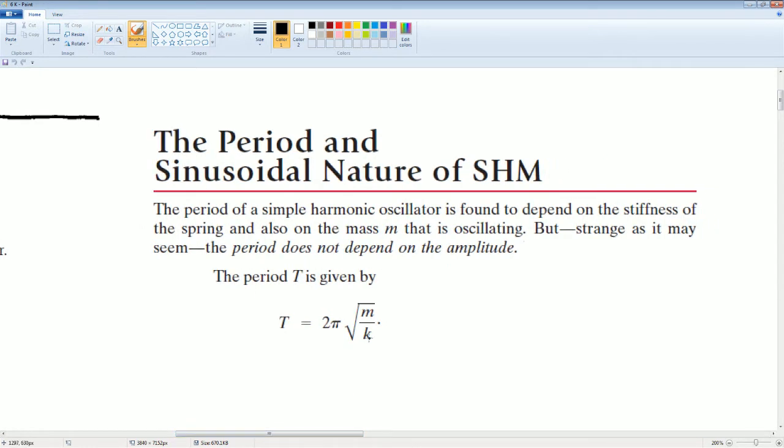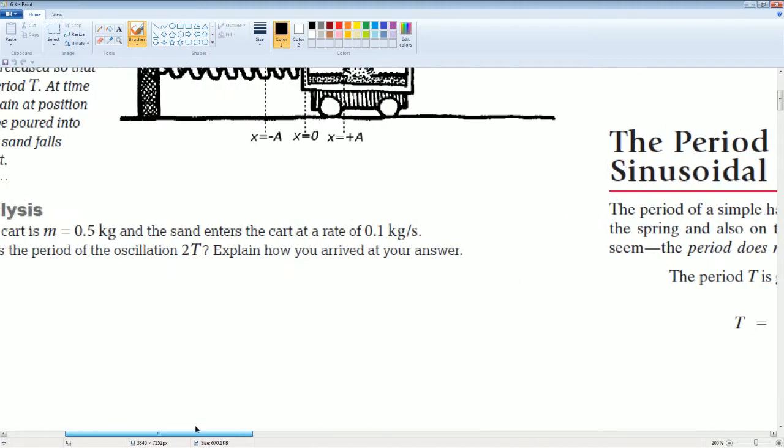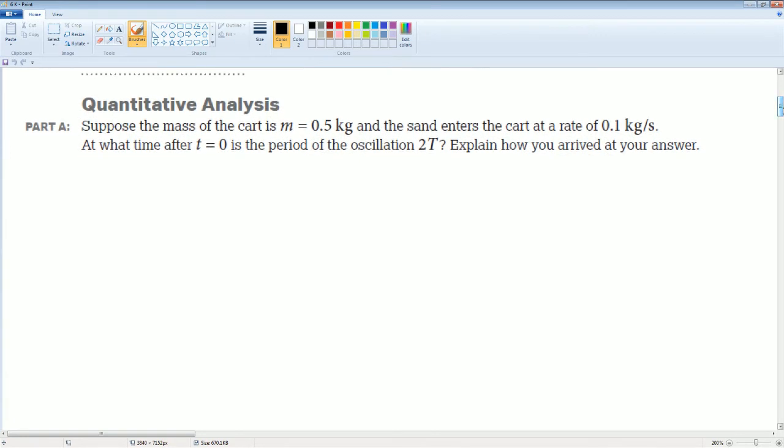M stands for the mass, K is the spring constant, and T is for the period. You can pause the video and try to do it if you would like, and now I'm going to show it to you.